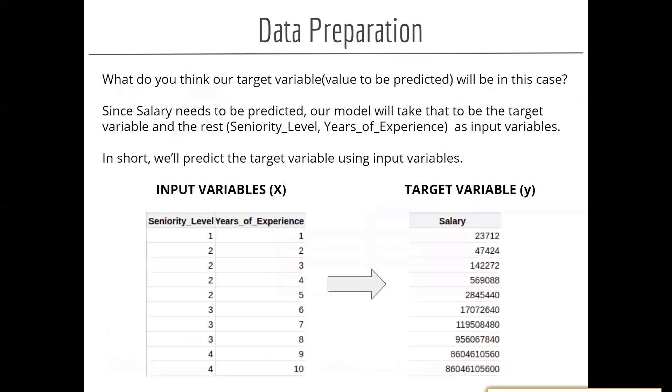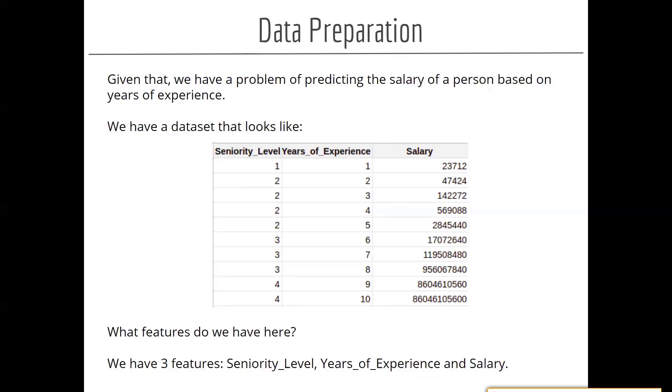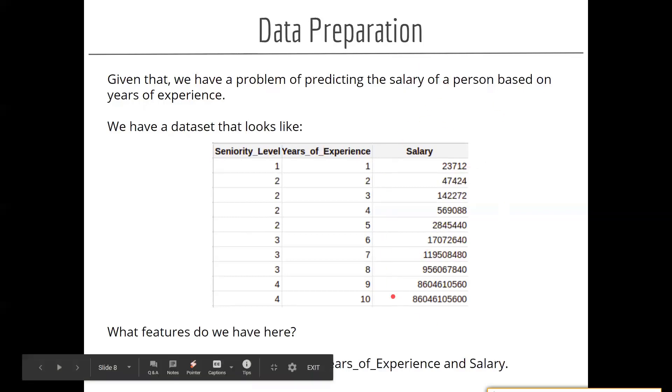I'm directly jumping into separating the variables into input and target variable. So input features and target variable - here we are pretty clear that we want to predict salary, right? We are pretty clear we want to predict the salary, so salary becomes our target variable.